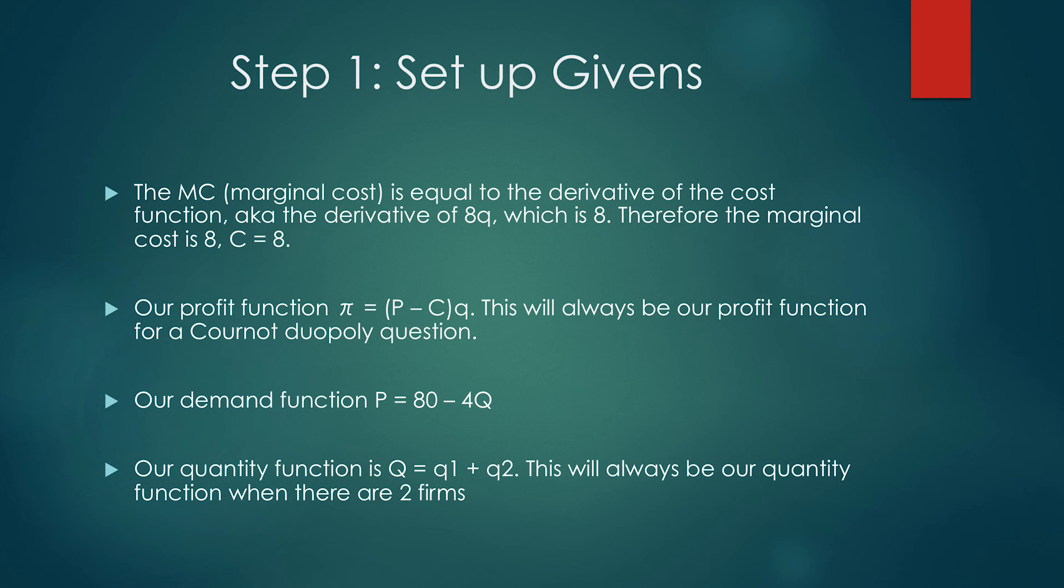Step one is to set up the givens. The marginal cost is equal to the derivative of the cost function, the derivative of 8q, which is 8. Therefore, the marginal cost is 8, or C equals 8. Our profit function is π equals (P minus C) times q. This will always be our profit function for a Cournot duopoly question.